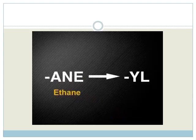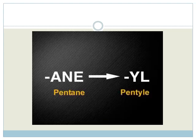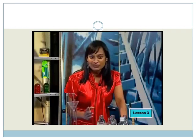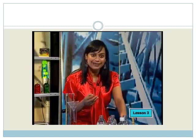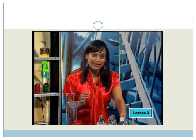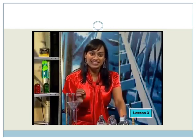Here methane is used as a branch so it is called methyl. If ethane is used as the branch it becomes ethyl, propyl, butyl, pentyl and so on. The only difference between an alkane and an alkyl branch is that branches end their names in Y-L in place of A-N-E.